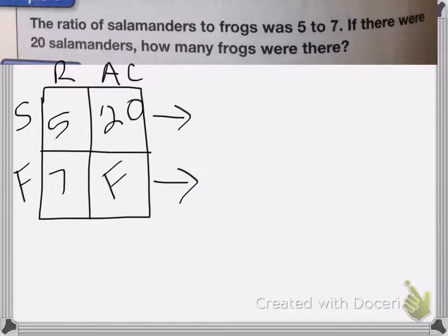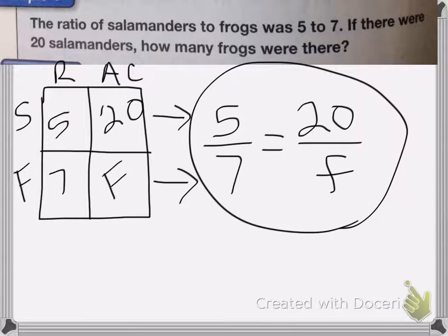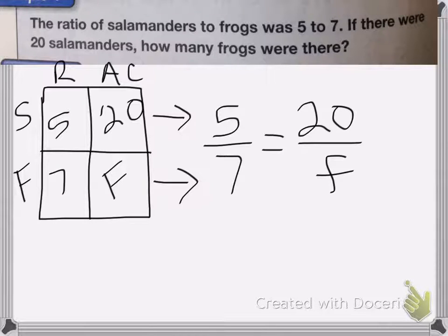So I get five over seven is equal to 20 over F. We've just turned this into a proportion, because I know that these two numbers have to be equal to each other when we're dealing with ratios. So five sevenths equals 20 over something.